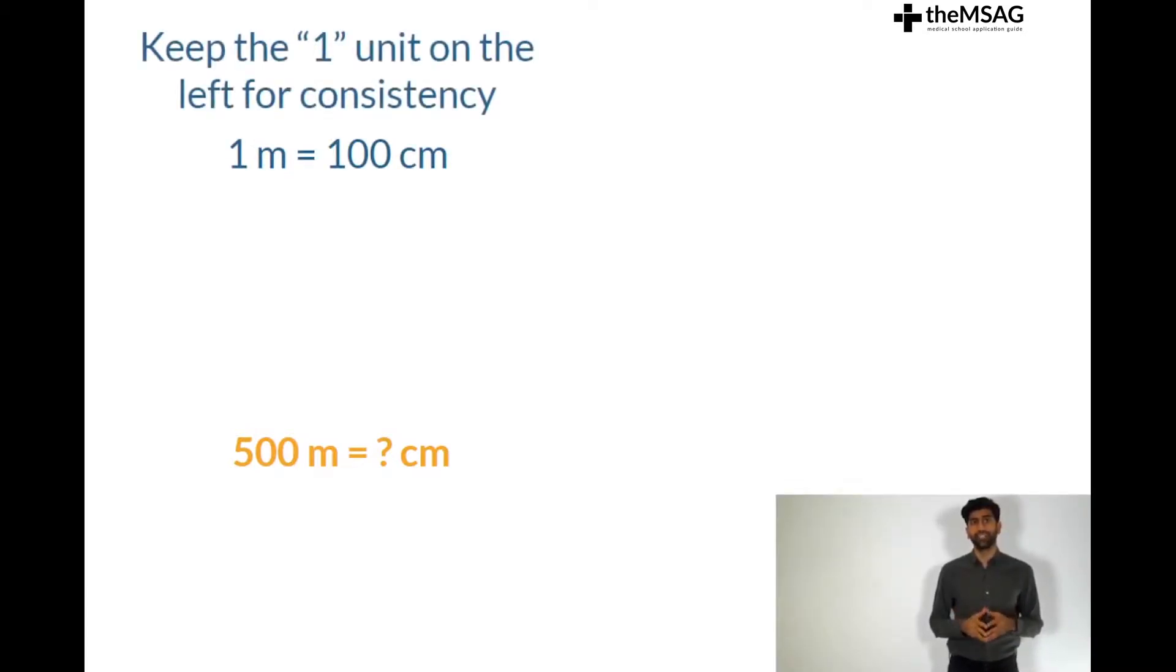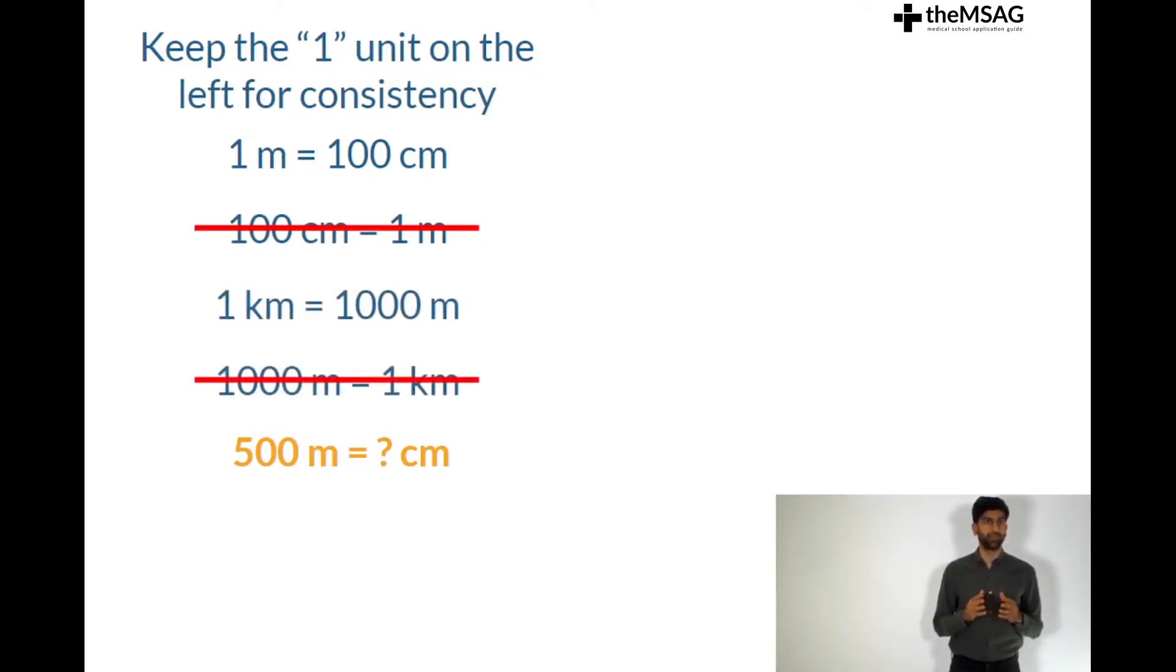Keep the one unit on the left for consistency, write 1 meter equals 100 centimeters rather than 100 centimeters equals 1 meter. Write 1 kilometer equals 1000 meters rather than 1000 meters equals 1 kilometer. Now you just need to remember that.